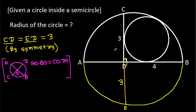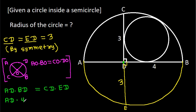Here, chord AB and CE are intersecting at D. So AD times BD equals CD times ED. We have AD times BD equals 4, and CD is 3 times ED is 3, giving us 9. So AD equals 9 over 4.